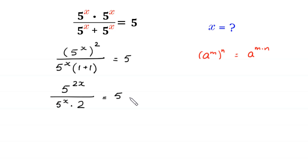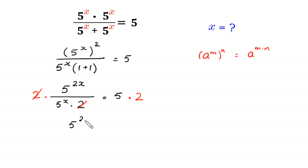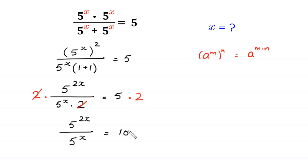Now, we multiply both sides of this equation by 2. The 2 on the left cancels with the 2 in the denominator, leaving 5 to the power 2x divided by 5 to the power x, equal to 5 times 2, which is 10.